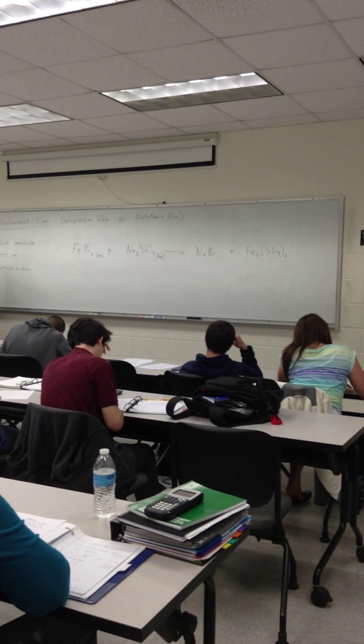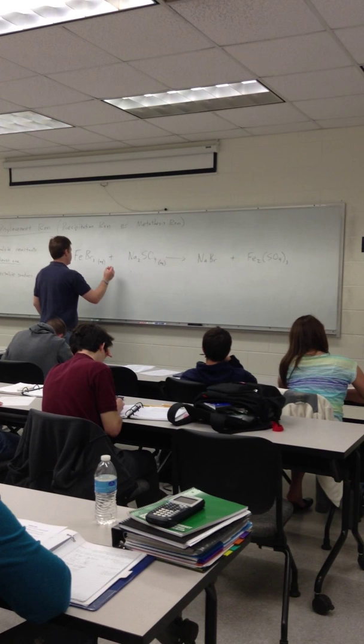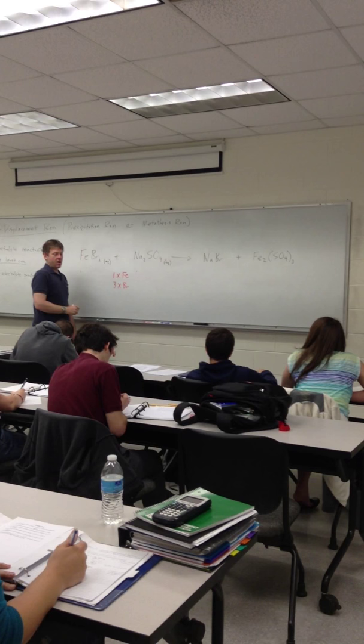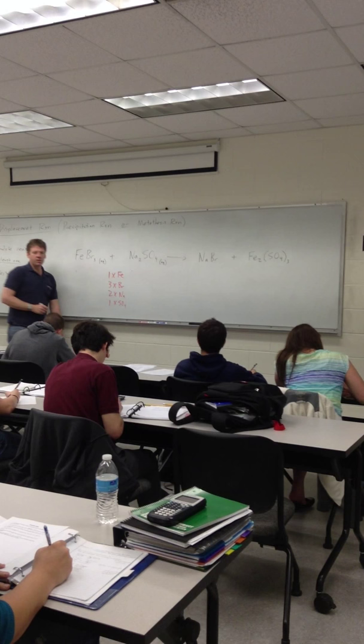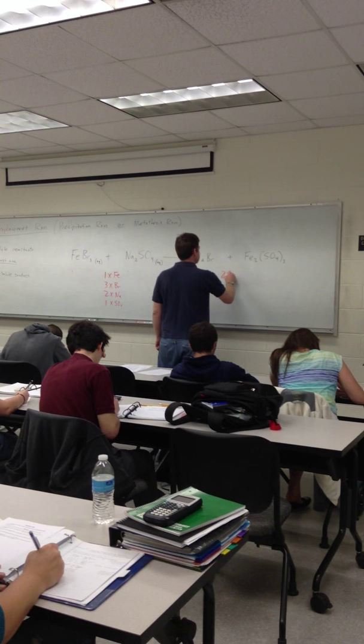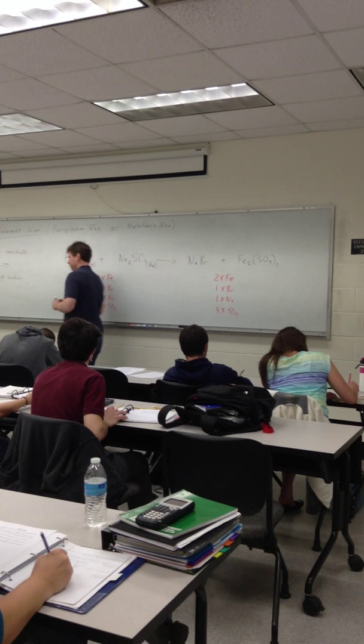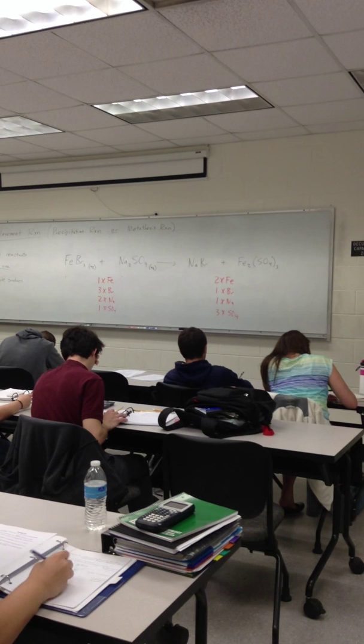And since our polyatomic anion sulfate is staying intact in this reaction, we can simply balance it as a sulfate. We've got 1 iron here, 3 BRs, 2 sodiums, and 1 sulfate on the reactant side. Product side, 2 irons, 1 BR, 1 sodium, and 3 sulfates.